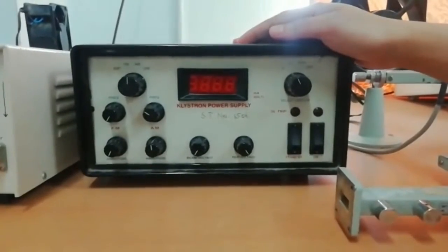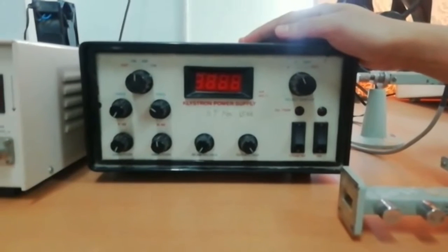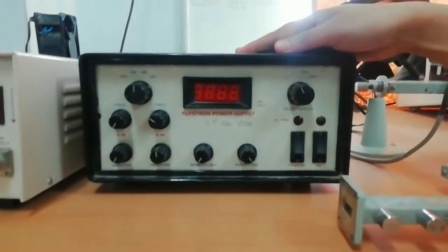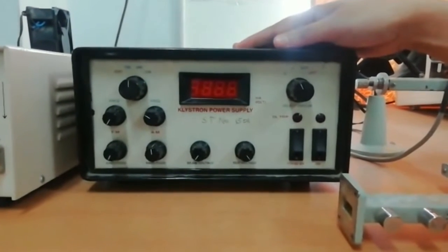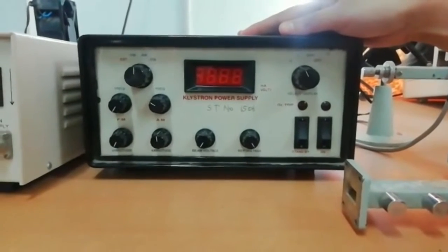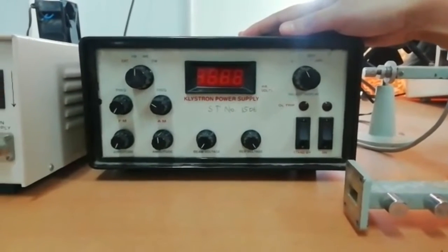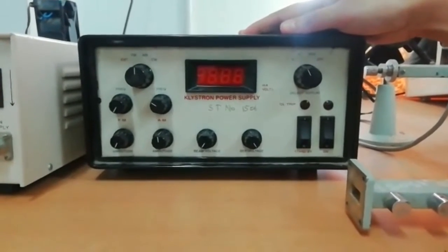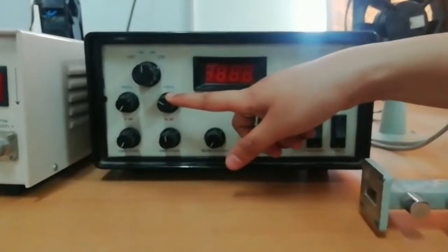Now this is the klystron power supply. It generates voltage which is required for driving the reflex klystron tube 2K25. It is a stable, regulated, and short circuit protected power supply. It has a built-in facility of square wave and sawtooth generators for amplitude as well as frequency modulations.